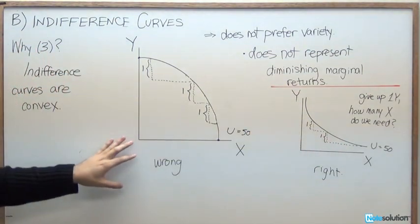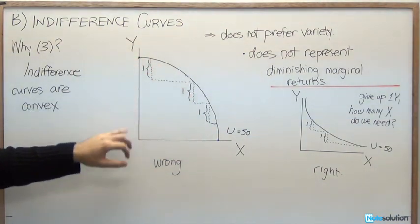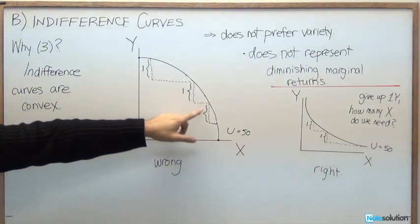On the left here, we've got an indifference curve that's wrong. So we've got a concave indifference curve. So from the perspective of the origin, we've got a curve that kind of bows inwards.